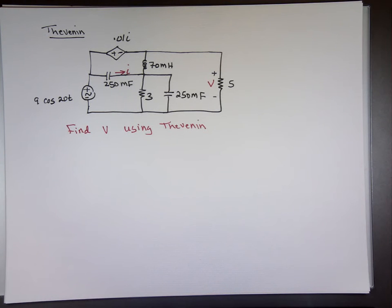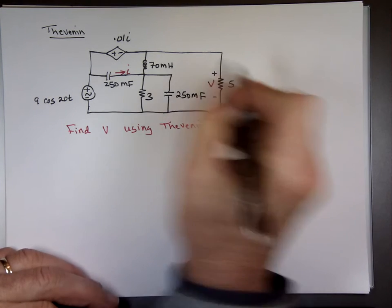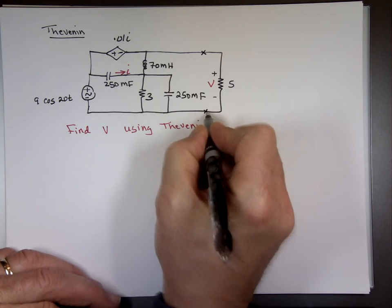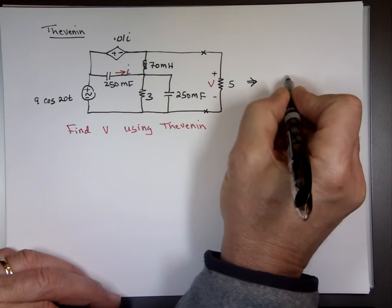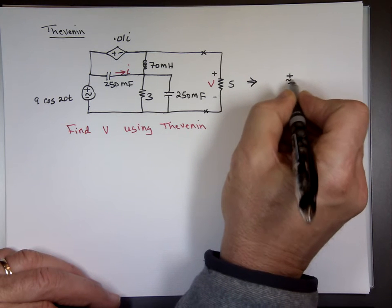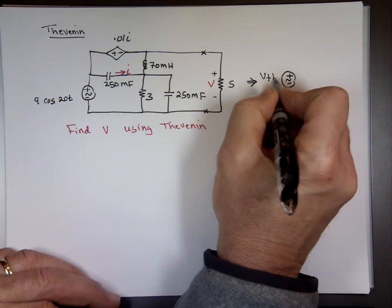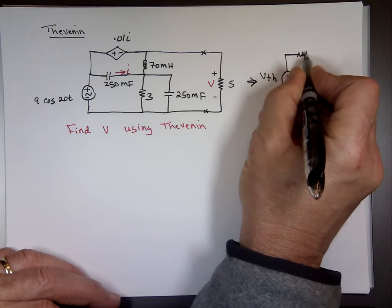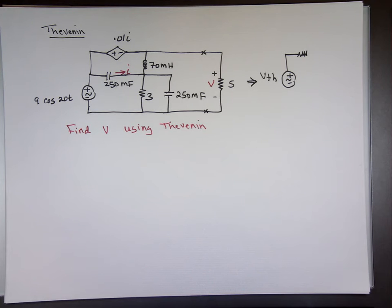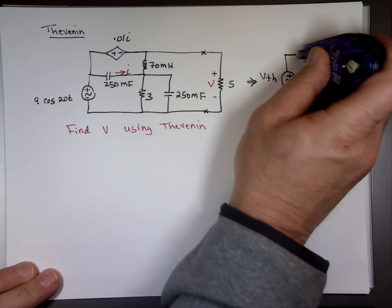This is a problem I made up, and I want to find the voltage at a specific node. Recalling from circuits one, if you decide to use Thevenin, your goal is to take this circuit, chop it at a point, and replace that portion with a voltage source V-Thevenin — this will be an AC source — in series with an impedance Z-Thevenin. In circuits one we called it R-Thevenin; now we call it Z-Thevenin.